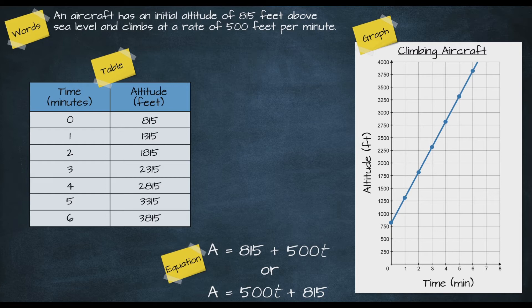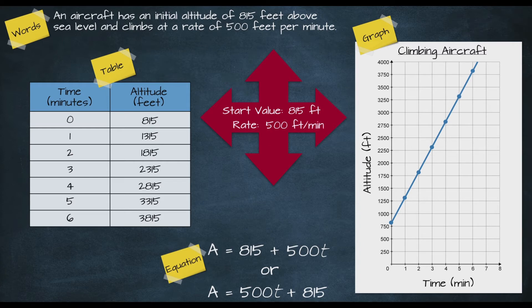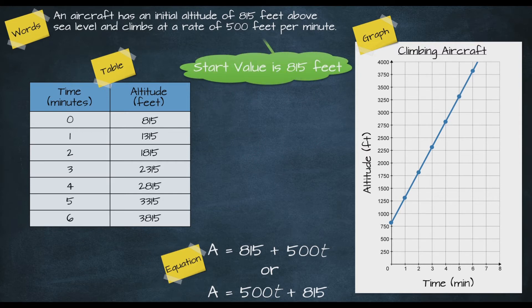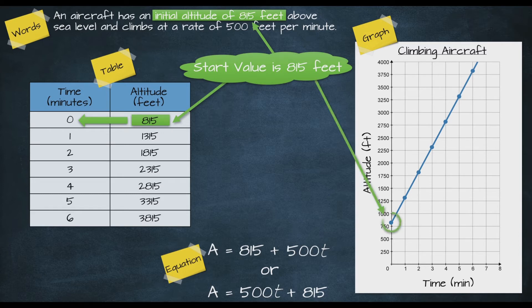So there they are — four ways of representing the relationship between altitude and time for the climbing aircraft. Notice that our two key values appear in all of these representations: each one displays a start value of 815 feet and a rate of 500 feet per minute. The start value of 815 feet is explicitly stated in the word description, appears in the table at time zero, shows on the vertical axis of the graph at time zero, and appears as the constant in the equation — the number without the variable attached.